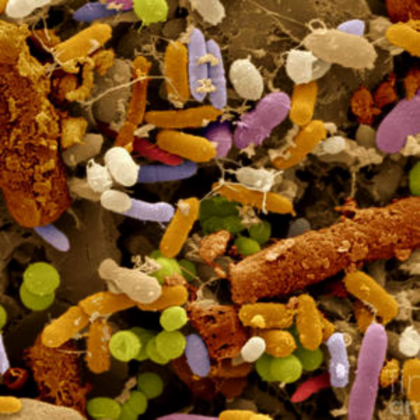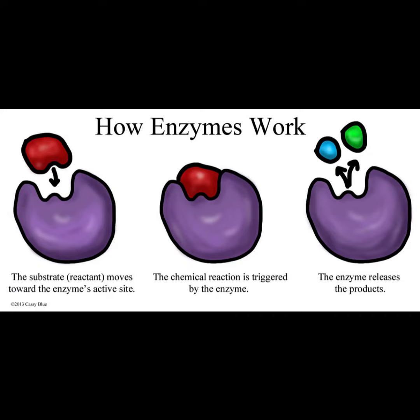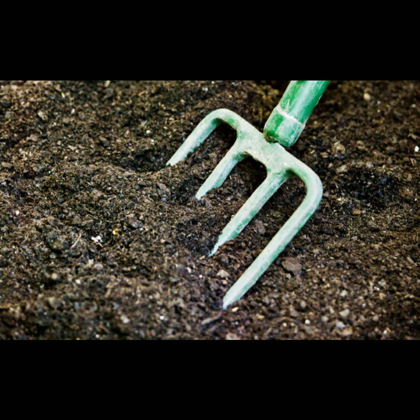Biological Processes: Soil pH influences various biological processes, including enzymatic reactions that occur in the soil. Enzymes responsible for breaking down organic matter and releasing nutrients are sensitive to pH changes. Maintaining the right pH ensures these processes operate efficiently.